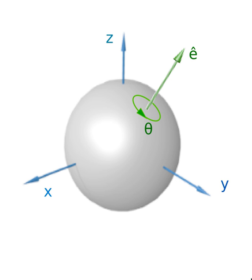The rotation group is a Lie group of rotations about a fixed point. This fixed point is called the center of rotation and is usually identified with the origin. The rotation group is a point stabilizer in a broader group of orientation-preserving motions. For a particular rotation, the axis of rotation is a line of its fixed points.